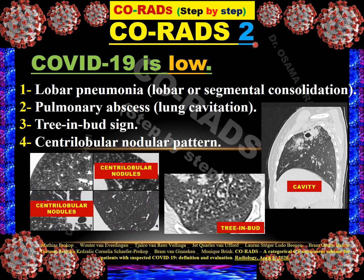CO-RADS 2 means COVID-19 is low probability. If there is a cavity, tree-in-bud appearance, or centrilobular nodules, we consider it CO-RADS 2. Also, if there are multifocal areas of lobar consolidations or lobar consolidations, we consider it CO-RADS 2 — meaning low possibility of COVID-19 diagnosis.